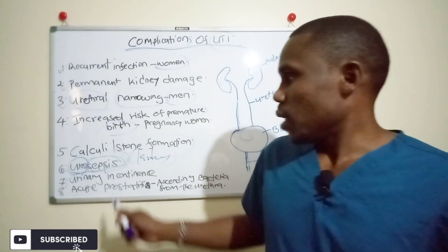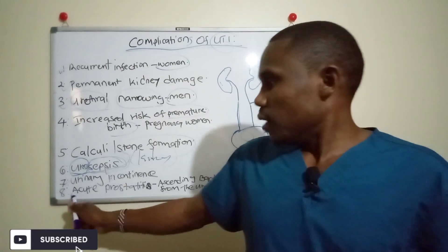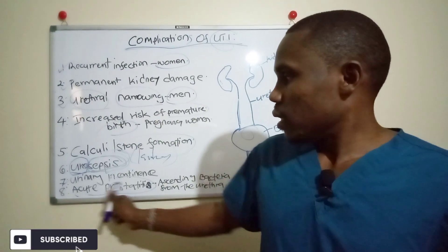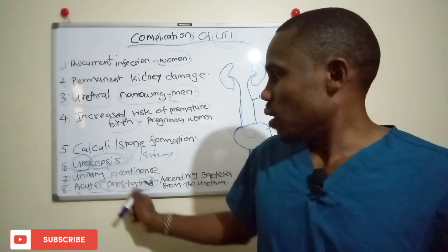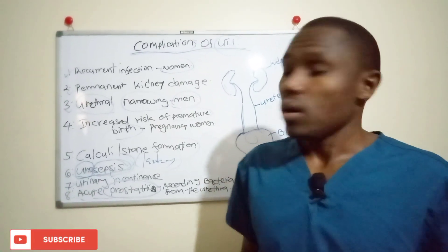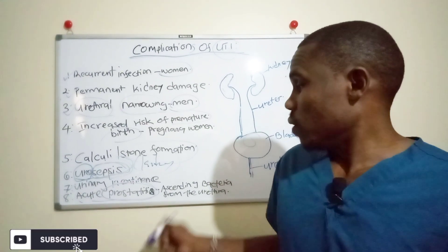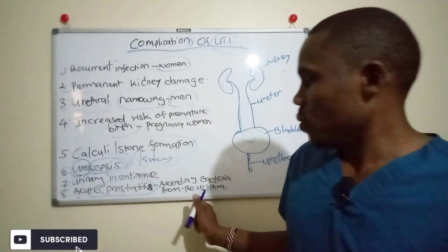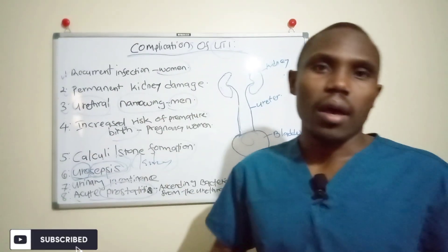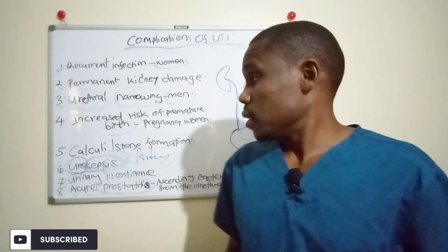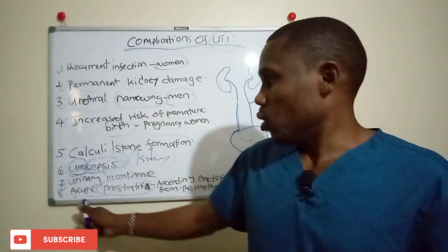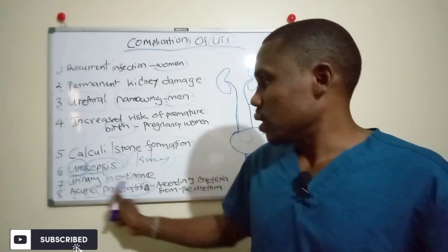Another complication is acute prostatitis, which is inflammation of the prostate gland. This occurs because of ascending bacteria from the urethra reaching the prostate gland and causing infection there.